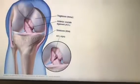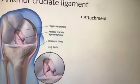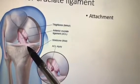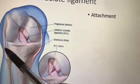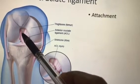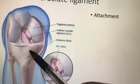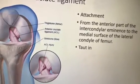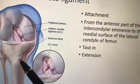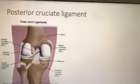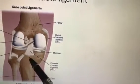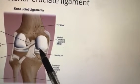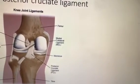The anterior cruciate ligament arises from the anterior part of the intercondylar area and goes to the medial surface of the lateral condyle of the femur. The posterior cruciate ligament arises from the posterior part of the intercondylar area and goes to the lateral surface of the medial condyle. The ACL is taut in complete extension.